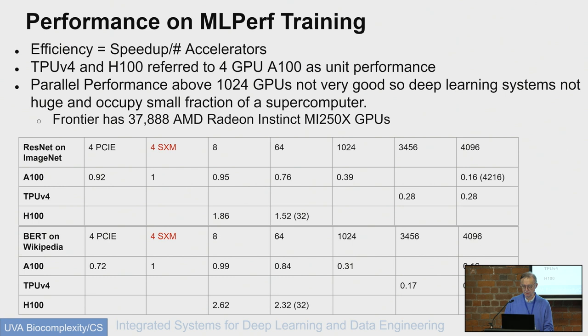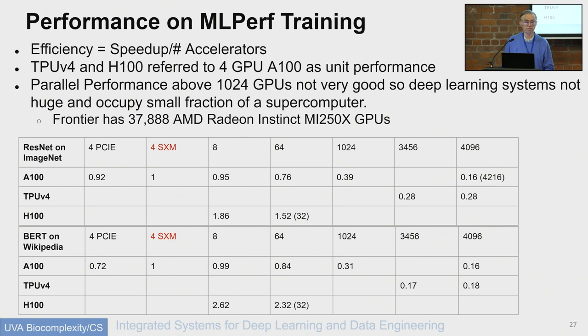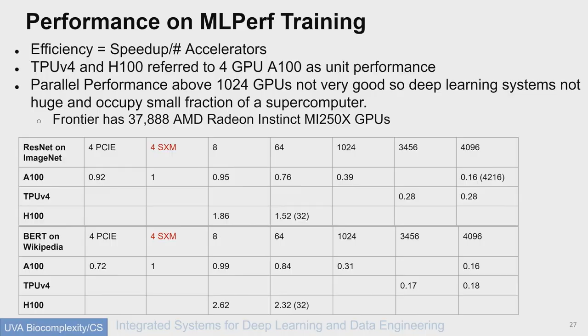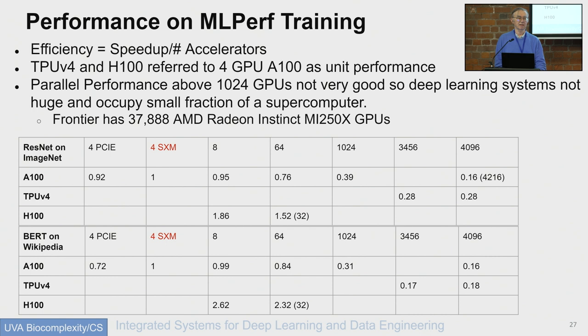Looking at MLPerf benchmarking of the latest training results, if you look at efficiency it's pretty terrible. There are results from Google and NVIDIA up to 4,000 TPUs or GPUs, but the efficiency there is less than 20%. So you're not going to use 4,000 GPUs on any practical problem. Especially if you have 27 billion runs to make, you're going to run lots of jobs. The largest number of GPUs any one job would use is maybe 512, and even that's only about 50% efficient.